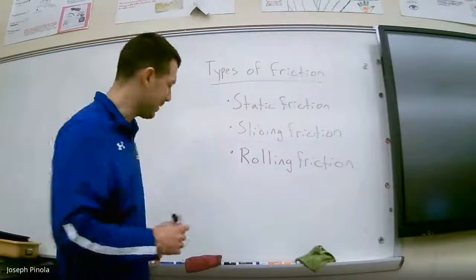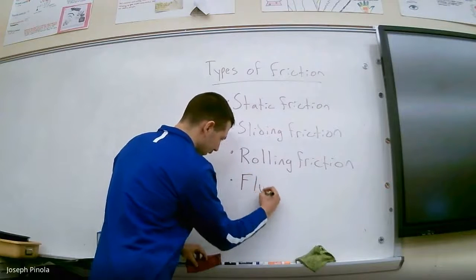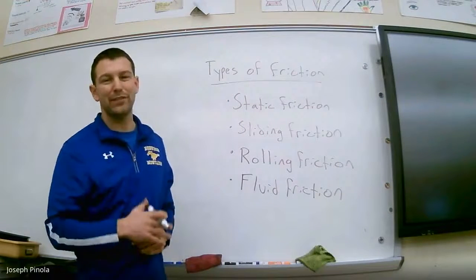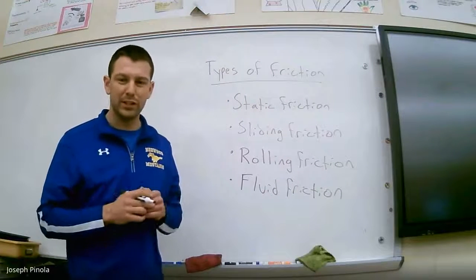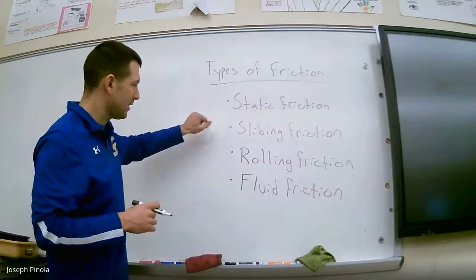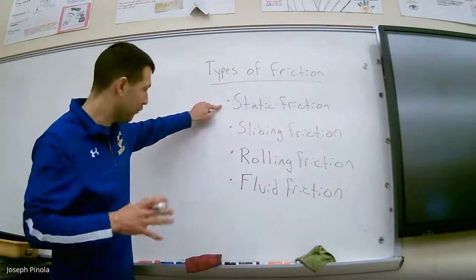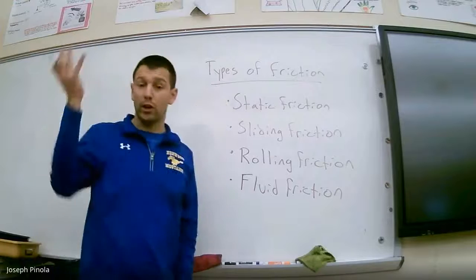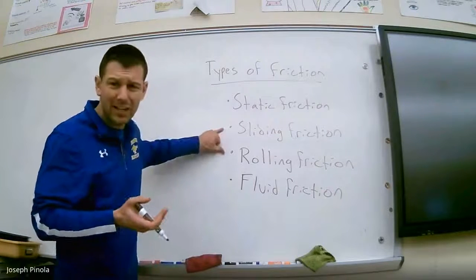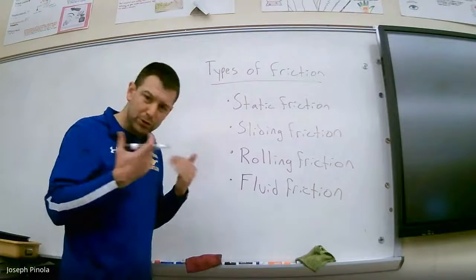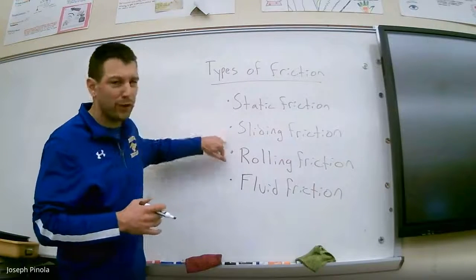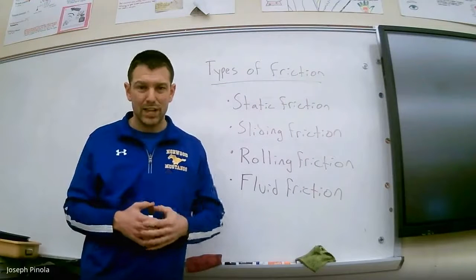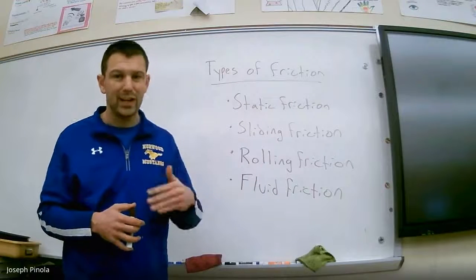There is one last type of friction called fluid friction, but we'll save that for another video. What I want you to know today is: an object at rest may not move because of static friction. But once the force is big enough to overcome static friction, either sliding or rolling friction takes over—and these two types are not as strong as static friction could be.